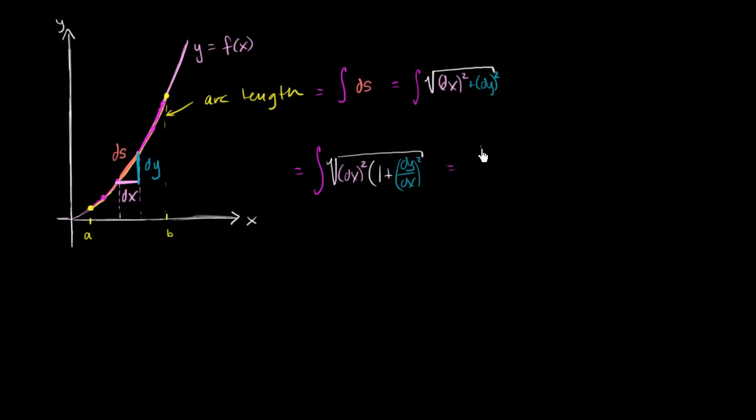And so this is going to be the integral of one plus dy dx squared. And this is interesting because we know what dy dx is. This is the derivative of our function, dy dx squared. And if you take the dx squared out of the radical, the square root of dx squared is just going to be dx. It's just going to be dx.